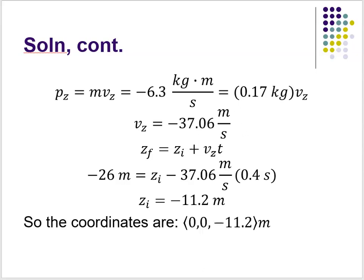Now I'll use the position update equation: Z_final = Z_initial + VZ × t, which comes from the definition of average velocity. We don't know Z_initial — that's what we're solving for. Z_final is −26 meters, VZ is −37.06 m/s, and the time after the puck was hit is 0.4 seconds. Multiplying −37.06 times 0.4 and solving for Z_initial gives Z_initial = −11.2 meters. So the coordinates of the hit are (0, 0, −11.2) meters, since the motion was one-dimensional.